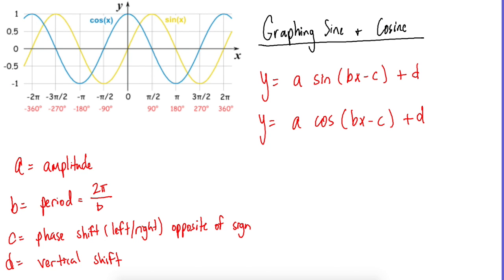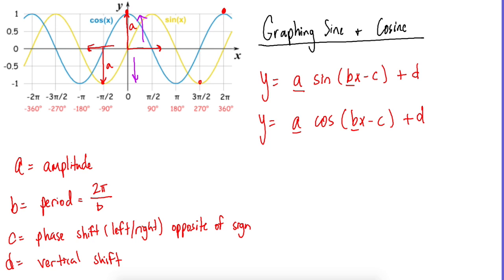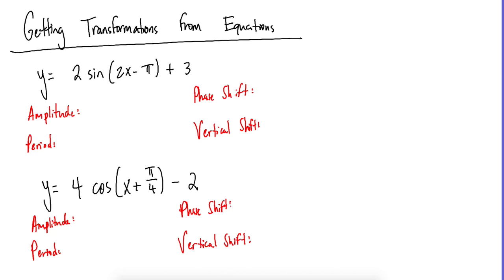For graphing sine and cosine, you need to extract the key information. In the general form, A is the amplitude — how high or low from the midline the graph goes. B determines the period, which is calculated as 2π over B. That tells you the distance from peak to peak.